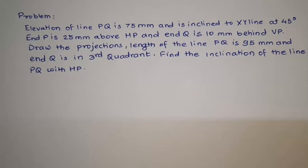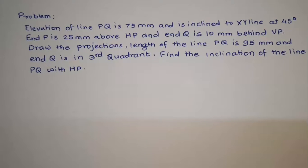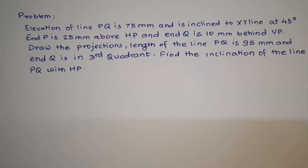They have given the true length — both FVTL and TVTL. Now they are specifying the location of point Q in particular, saying point Q is in the third quadrant. Point P is in either the first or second quadrant since it is 25mm above HP, but we don't know exactly where yet. They are asking us to find the inclination of line PQ with HP — that is, find theta.